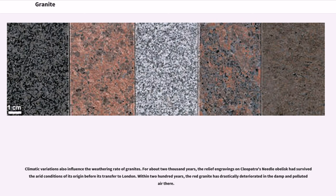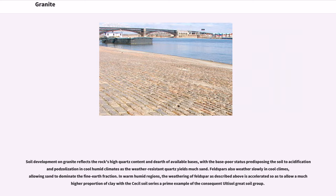Climatic variations also influence the weathering rate of granites. For about 2000 years, the relief engravings on Cleopatra's Needle obelisk had survived in the arid conditions of its origin before its transfer to London. Within 200 years, the red granite has drastically deteriorated in the damp and polluted air there. Soil development on granite reflects the rock's high quartz content and dearth of available bases, with the base-poor status predisposing the soil to acidification and podzolization in cool humid climates as the weather-resistant quartz yields much sand. Feldspars also weather slowly in cool climes, allowing sand to dominate the fine earth fraction. In warm humid regions, the weathering of feldspar is accelerated so as to allow a much higher proportion of clay, with the Cecil soil series a prime example of the consequent ultisol great soil group.